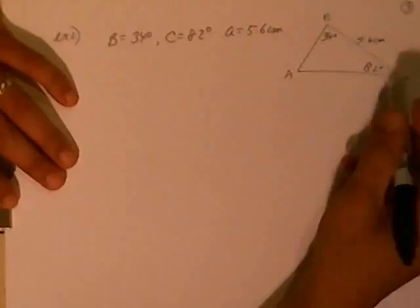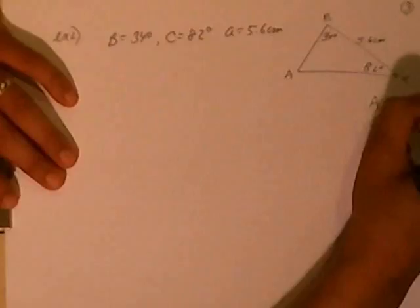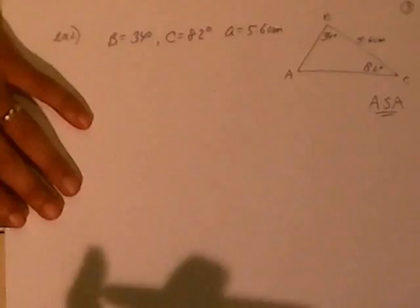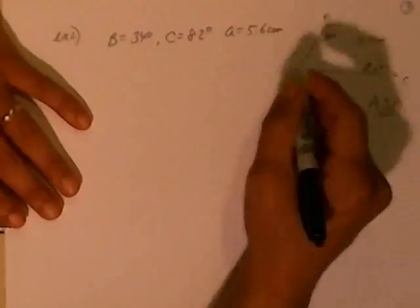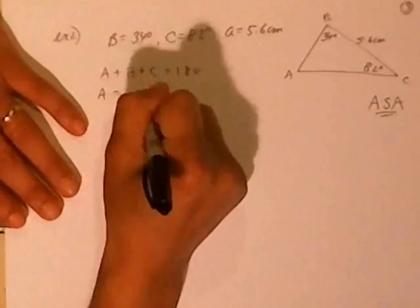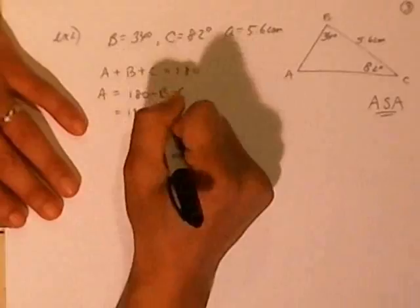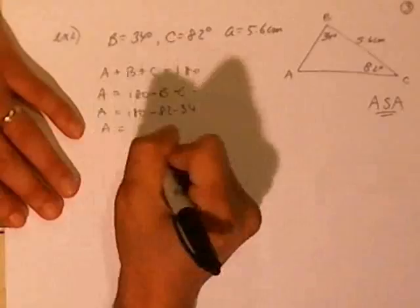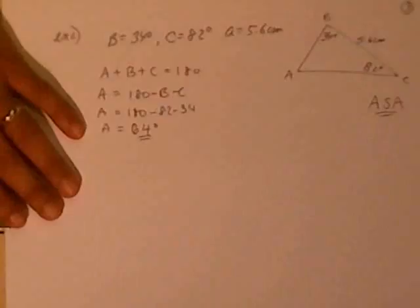So let's get back and finish the rest of example number two. In this situation, B is equal to 34 degrees. C is equal to 82 degrees. Should have been a little bit bigger, but it doesn't really matter. The side, little a, is opposite the angle. So it's going to be 5.6 centimeters. Make sure you draw the triangle out again. Now, let's see what kind of situation this is. This is an angle side angle situation, A, S, A situation. The angle side angle situation, you're going to use the law of sines. So we have to figure out what this angle is. Angle A plus angle B plus angle C has to equal 180 degrees. Angle A is equal to 180 minus B minus C is equal to 180 minus 82 minus 34. And that angle A is going to be 64 degrees.